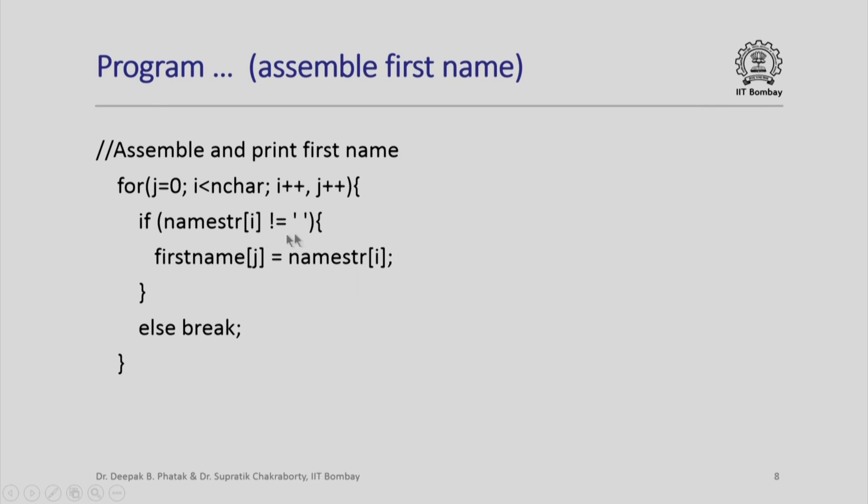The moment we encounter a blank character, this if statement will not be valid. I will not execute this but come to the else path which simply says break. So this loop iteration is broken the moment a blank character is encountered, which means the first name has ended.